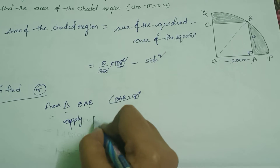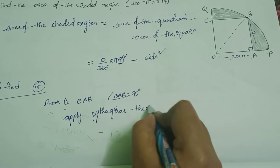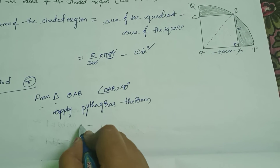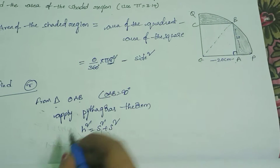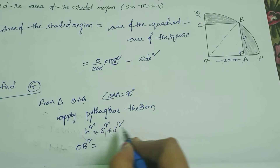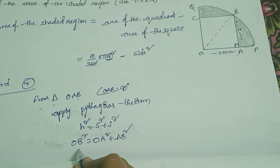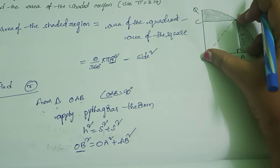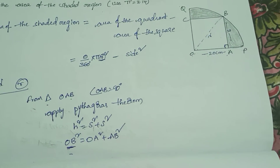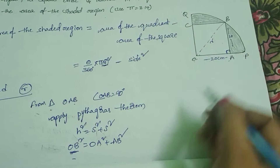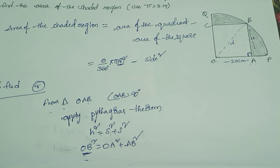Apply Pythagoras theorem. According to Pythagoras theorem, hypotenuse² = side₁² + side₂². Here the hypotenuse is OB. So OB² = OA² + AB². OB is the radius of the quadrant. Therefore R² = OA² + AB², where OA = 20 cm and AB = 20 cm.